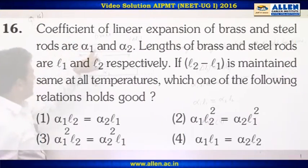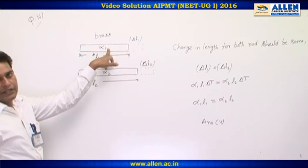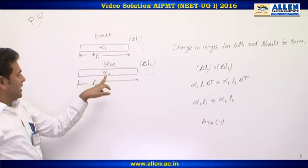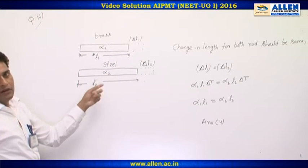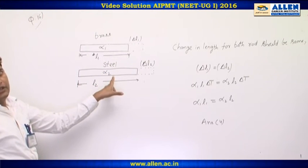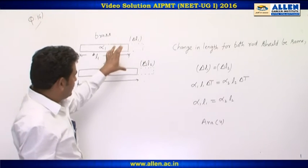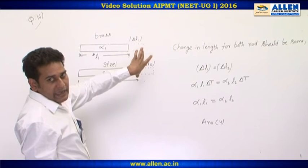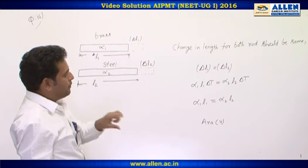In the question, a brass rod has length L1 and coefficient of linear expansion alpha1, and a second steel rod has length L2 and coefficient of linear expansion alpha2. The condition given is L2 minus L1, maintained at the same temperature.